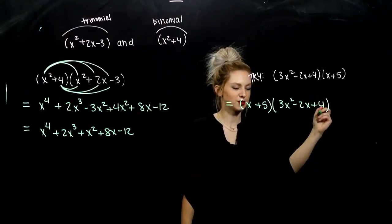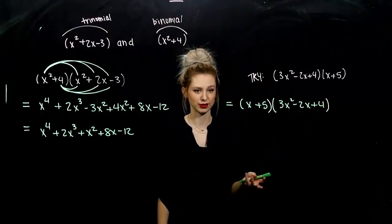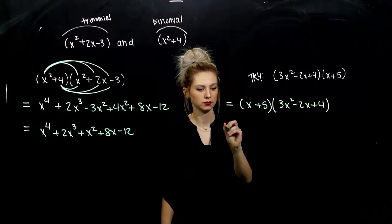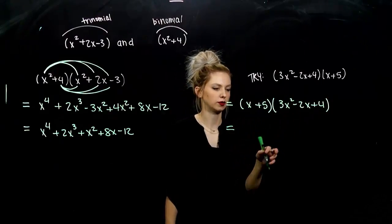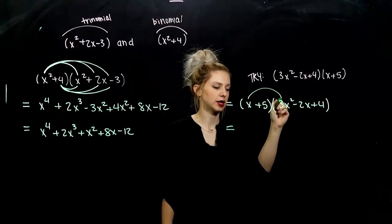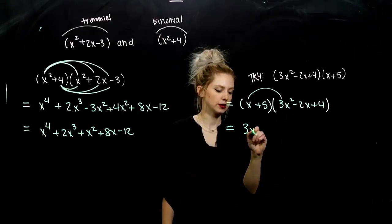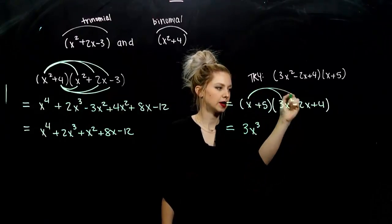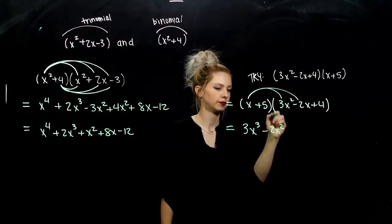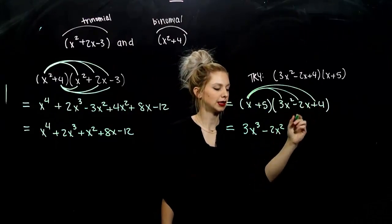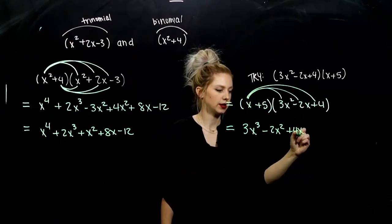And, if you kept it in the original way, you'll see we get the same answer in the end. It doesn't matter. But, personally, I like to see the smaller one first. So, I take x times the first term, 3x cubed. x times the second term, minus 2x squared. x times the last term, plus 4x.